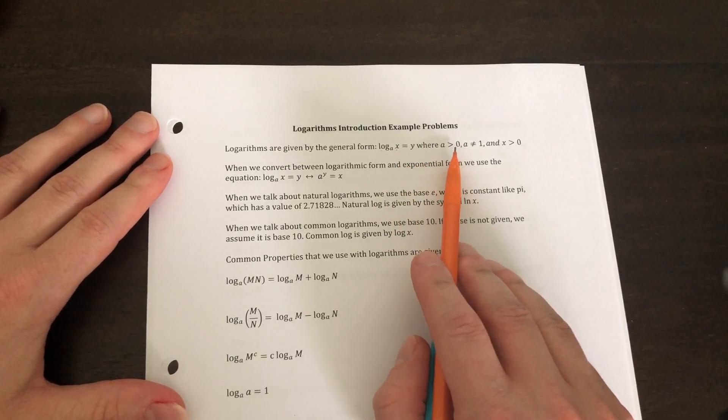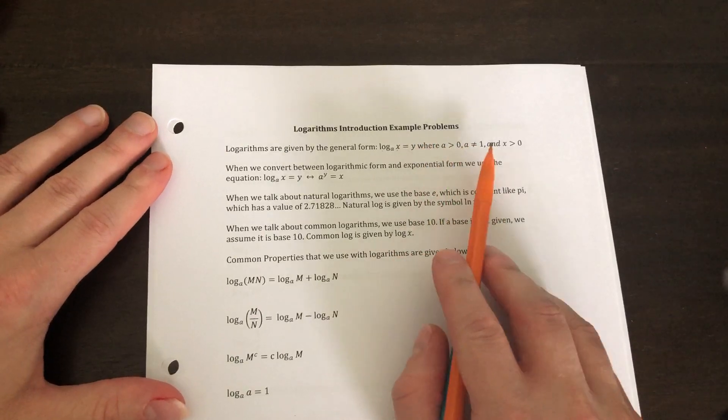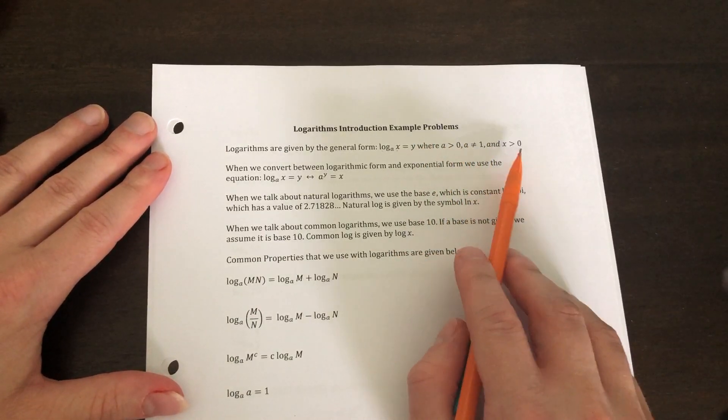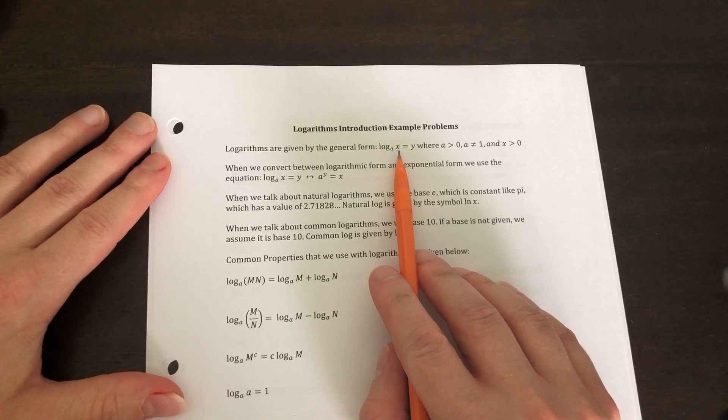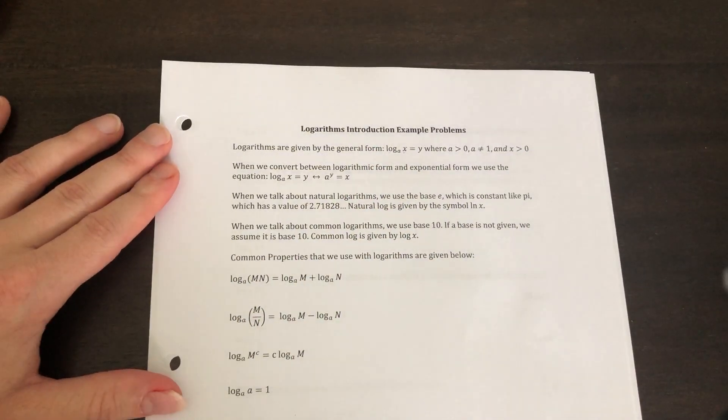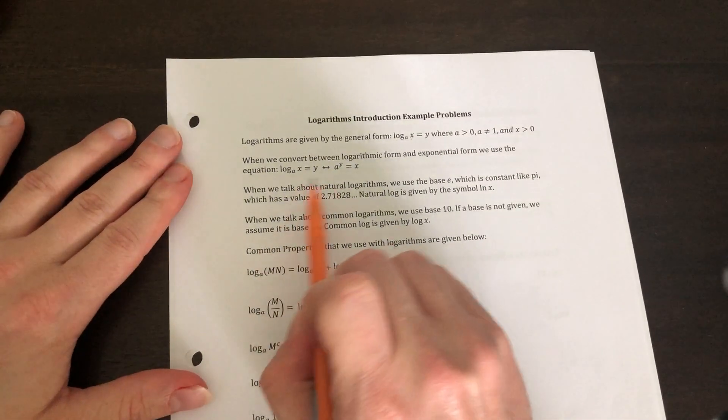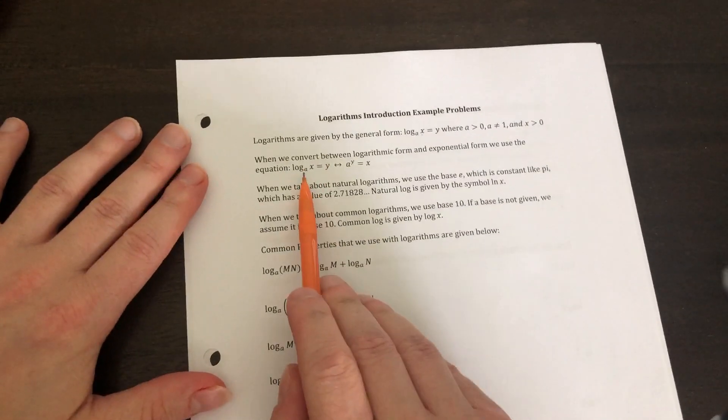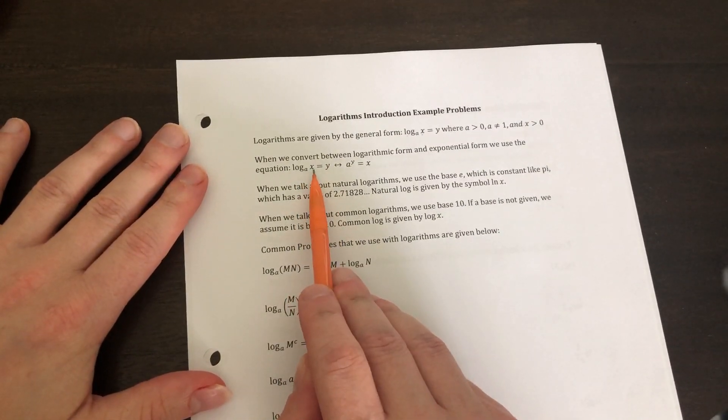The base is always greater than zero, and there's no such thing as base one. Your argument always has to be positive. When we convert between logarithmic form and exponential form, we go a to the y power is equal to x.